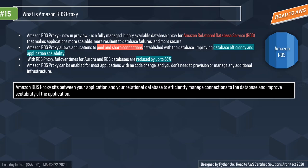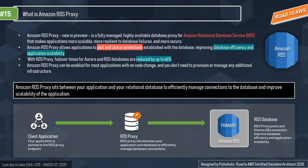With RDS Proxy, failover times for Aurora and RDS databases are reduced by up to 66%. Database credential authentication and access can be managed through integration with AWS Secrets Manager and AWS Identity and Access Management. The RDS Proxy sits between your application and your relational database, efficiently managing connections to the database and improving application scalability.